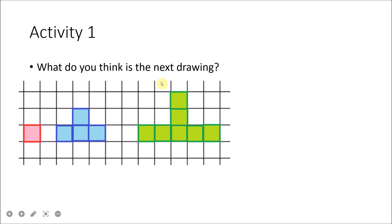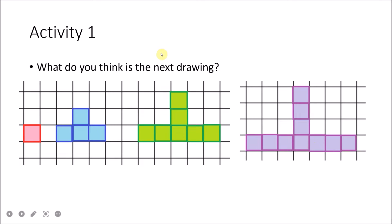Before we look into number patterns, let's try this activity. Given three drawings, what do you think will be the next drawing? The first drawing has one square. In the second drawing we add three squares to get four. In the third drawing, we add three more squares to the top and both sides. The next drawing adds one more at the top, one more to the left, and one more to the right.